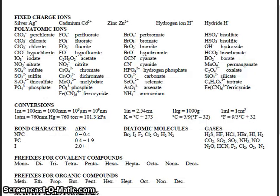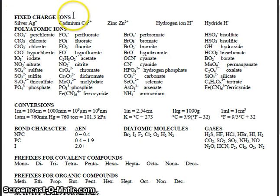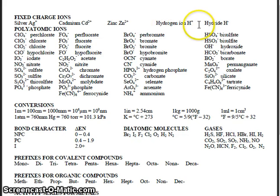You will find additional information on the back of your periodic table for some of the important transition metals located in the D block of the periodic table. Right at the top here, we see fixed charged ions which include silver, cadmium, zinc, the hydrogen ion, and hydride ion which can be plus one or minus one.